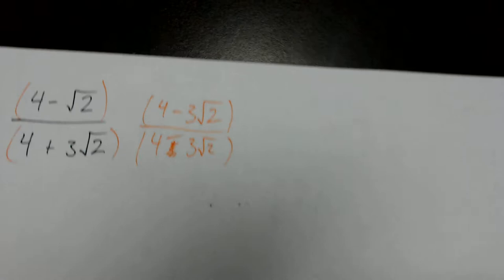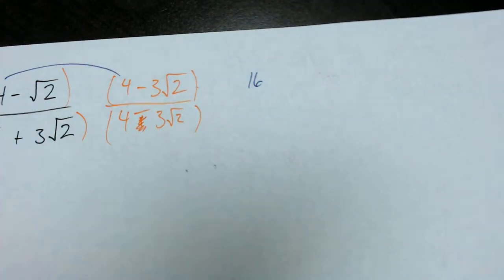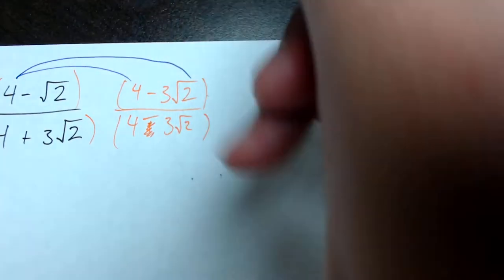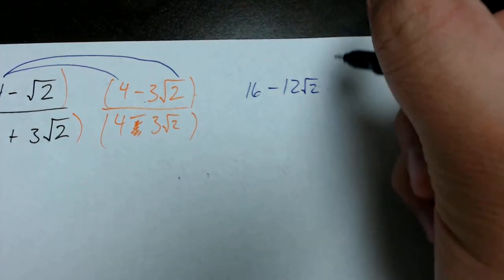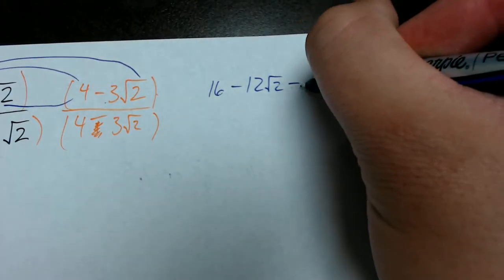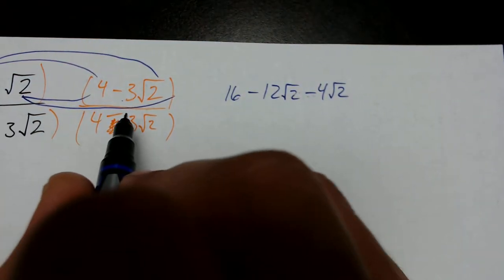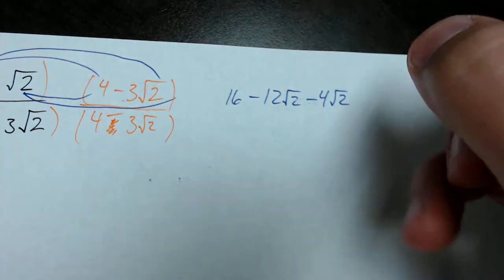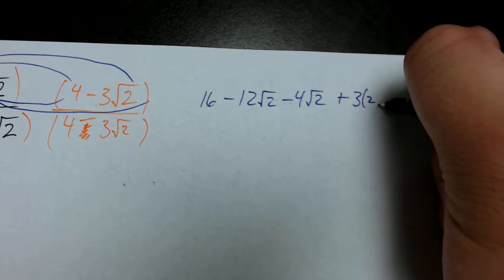We'll start the FOIL process on the numerator. 4 times 4 gives me 16. Outside times outside: 4 times negative 3 root 2 gives me negative 12 root 2. Inside times inside: negative root 2 times 4 gives me negative 4 root 2. Last times last: negative root 2 times negative 3 root 2 gives me positive 3 times 2.